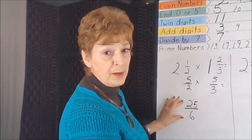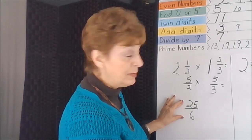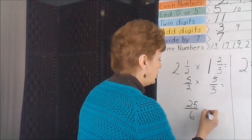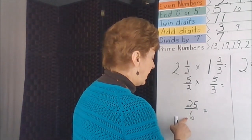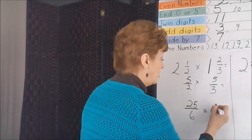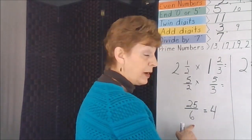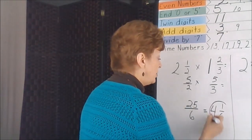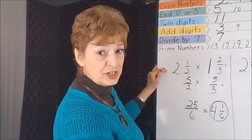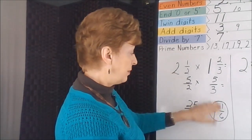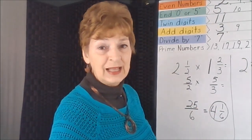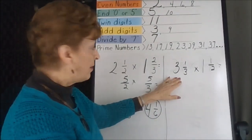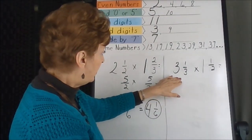This is an improper fraction that we're going to rename in simpler terms. Twenty-five divided by six is four, because four times six is twenty-four, and there's one remaining. So the answer to this mixed number multiplication would be four and one sixth.